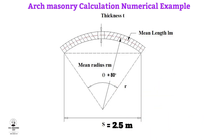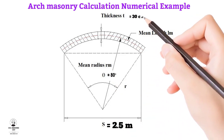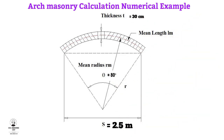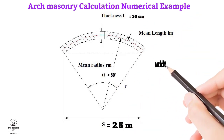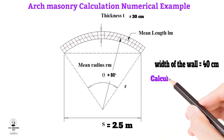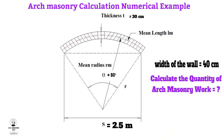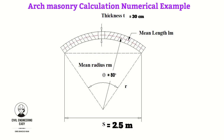An arch of 2.5 meter span subtends an angle of 80 degrees at the center. The thickness of the arch is 30 centimeters and the width of the wall is 40 centimeters. Calculate the quantity of arch masonry work.